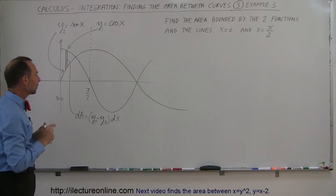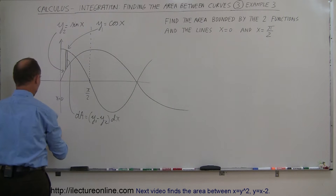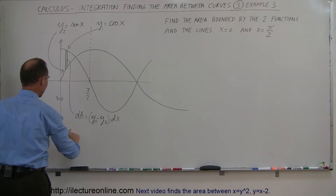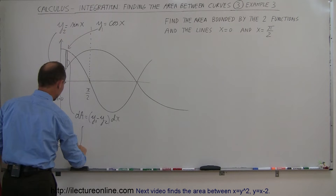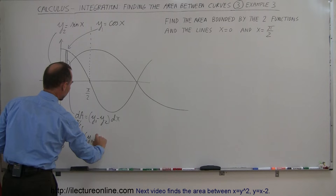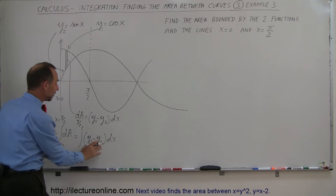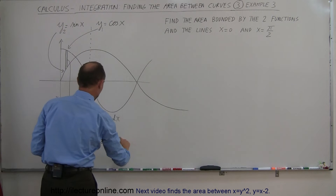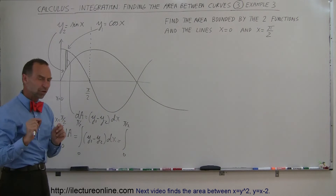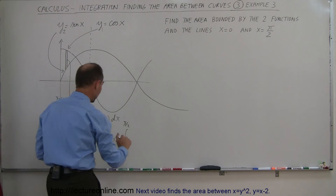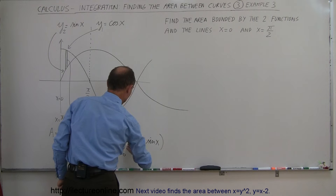If you do it that way, you're going to get a problem, because the functions are flipped partway through. So we have the area equal to the integral from 0 to pi over 2 of y1 minus y2 dx, which becomes the integral from 0 to pi over 2 of cosine of x minus sine of x dx.